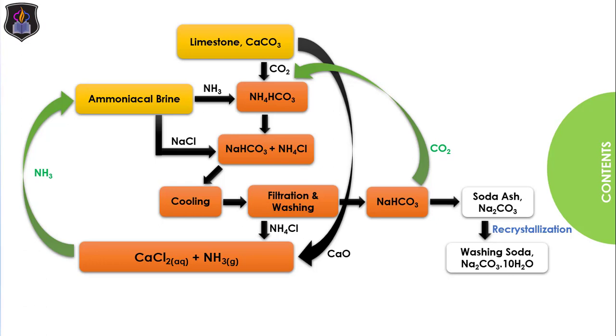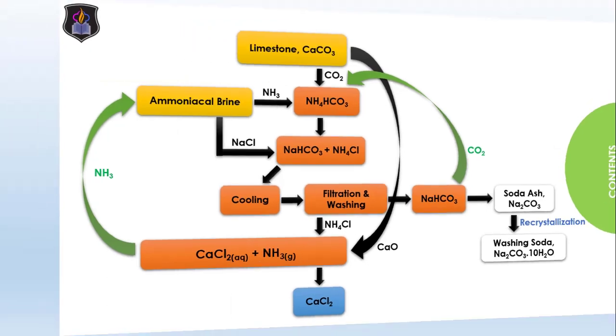Being a continuous process, once it starts, little supply of ammonia and carbon (IV) oxide will be needed while the calcium chloride is obtained as a byproduct of the process.